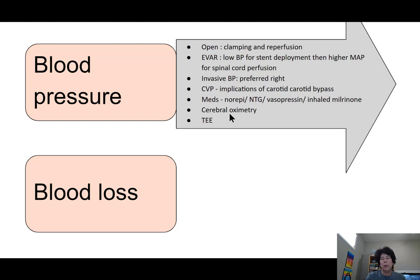Almost all of these patients will have cerebral oximetry because we're working very close to the arch, and monitoring cerebral flow and generalized cardiac output is important. TEE is also a very common monitor used in these cases — for the endo cases to guide deployment, and for the open cases to look at the impact of reperfusion on right ventricular or left ventricular function, filling, as well as systemic vascular resistance.